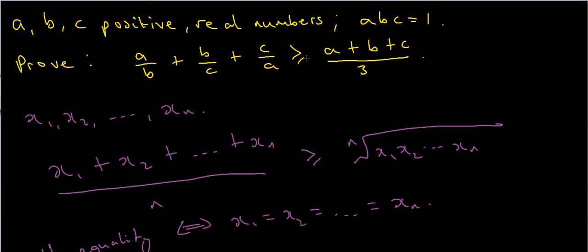In this video we're going to look at how to solve a problem using the arithmetic mean geometric mean inequality, or the AMGM inequality. We're given that A, B, and C are all positive real numbers such that ABC equals 1 — the product of these positive real numbers is 1. We're asked to prove that A over B plus B over C plus C over A is always greater than or equal to the sum of these numbers divided by 3.